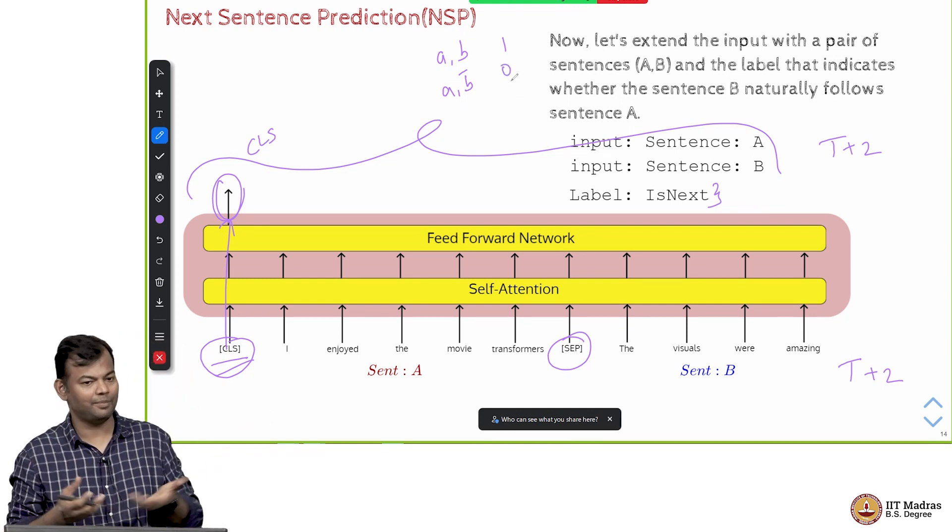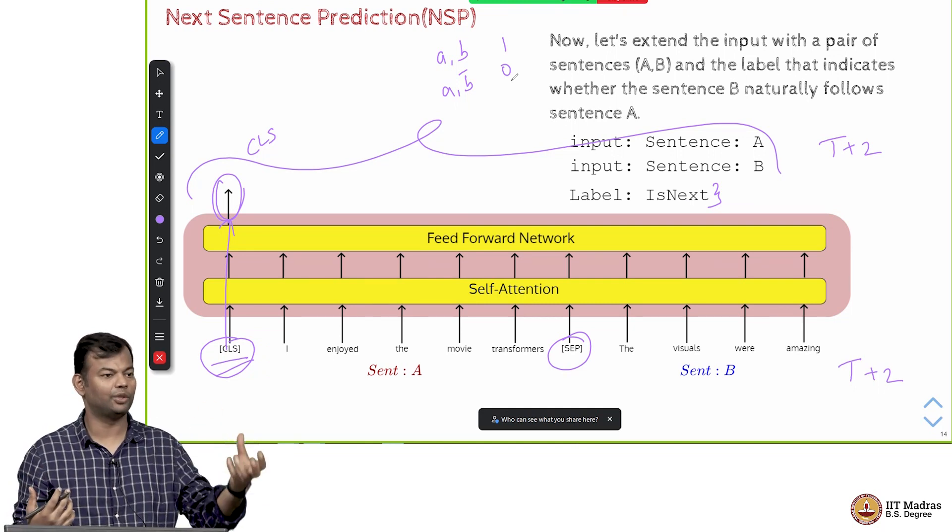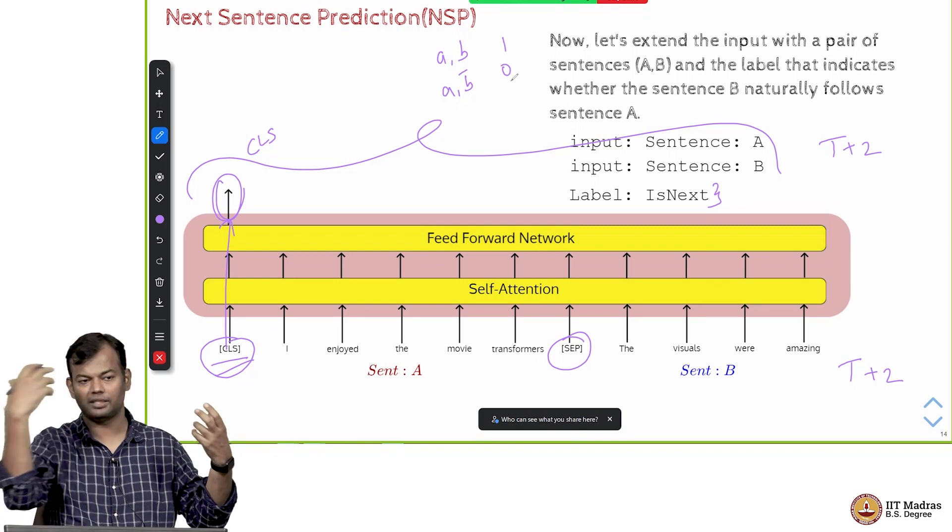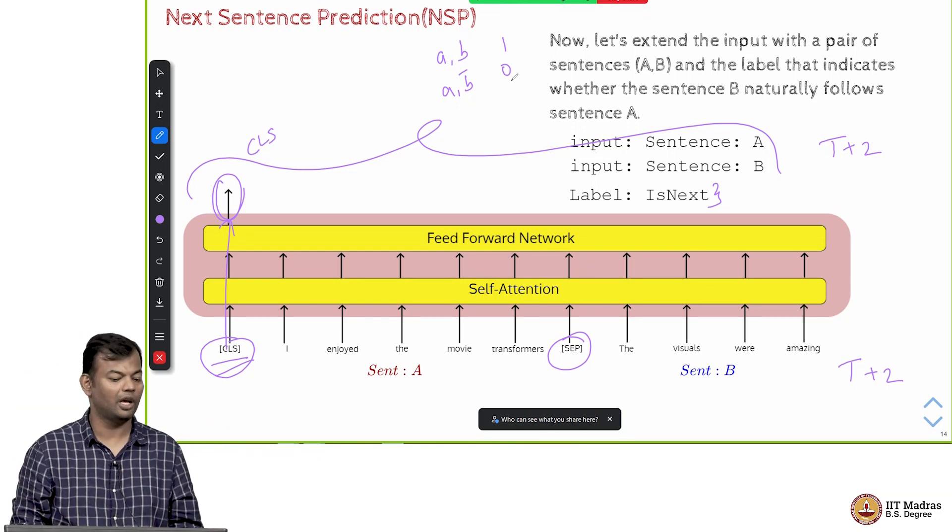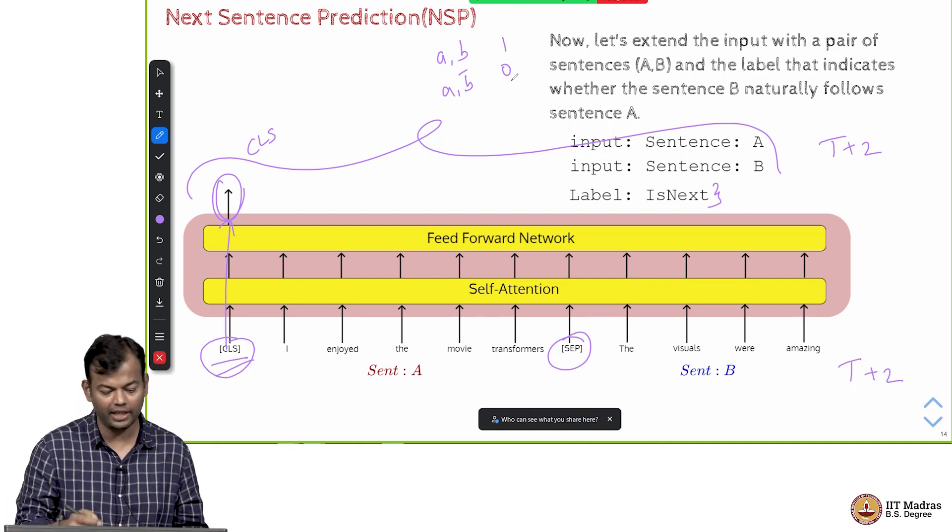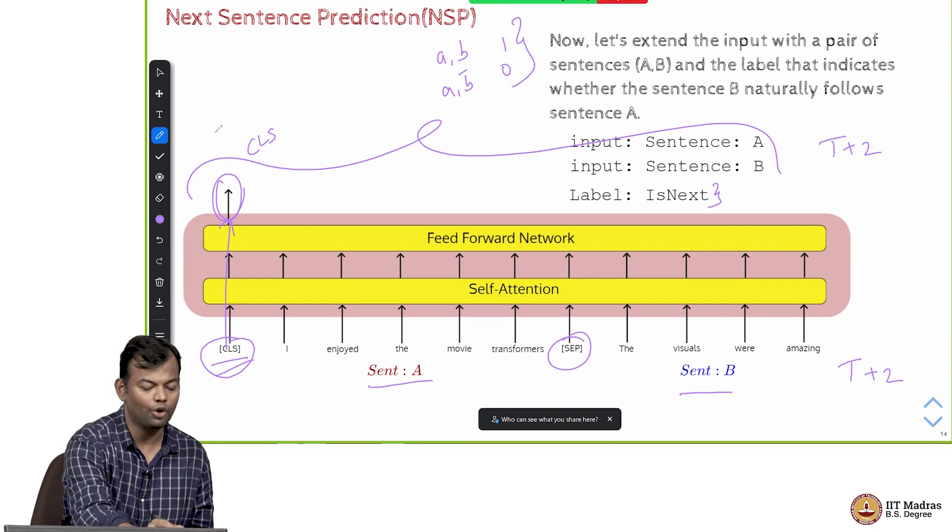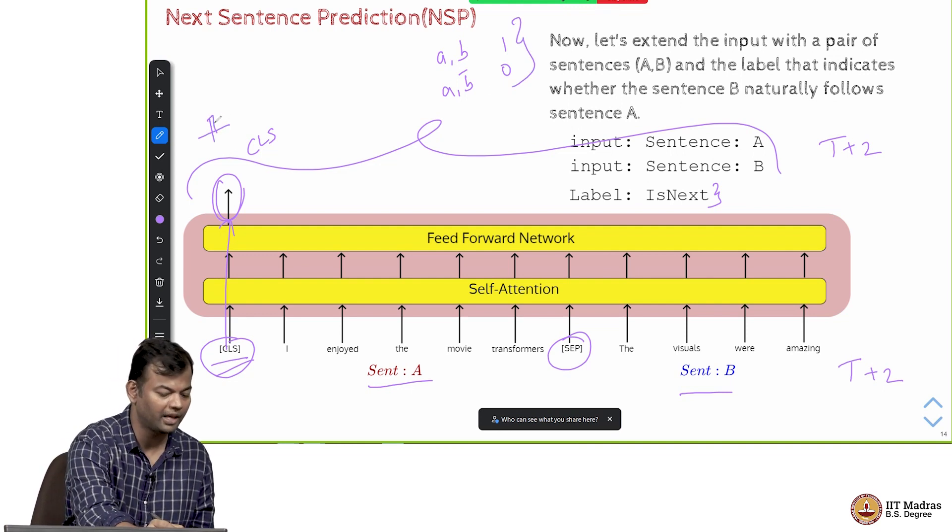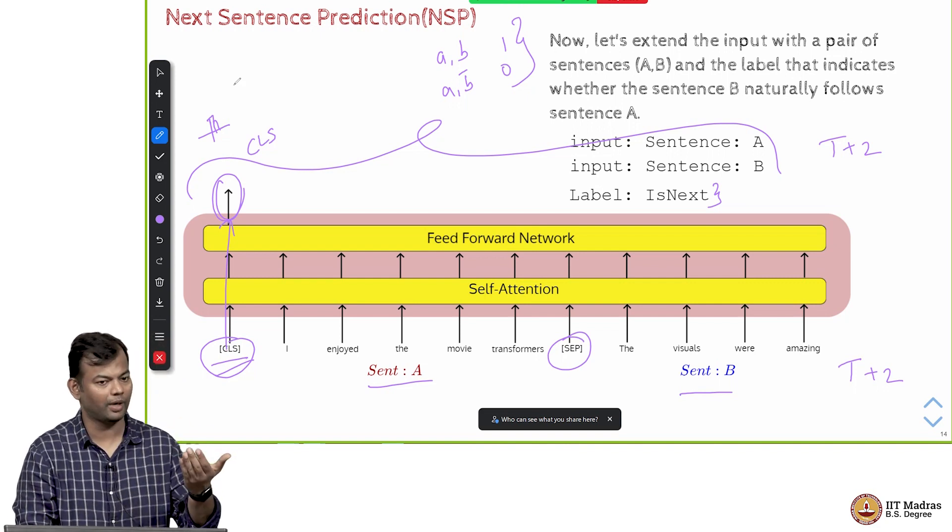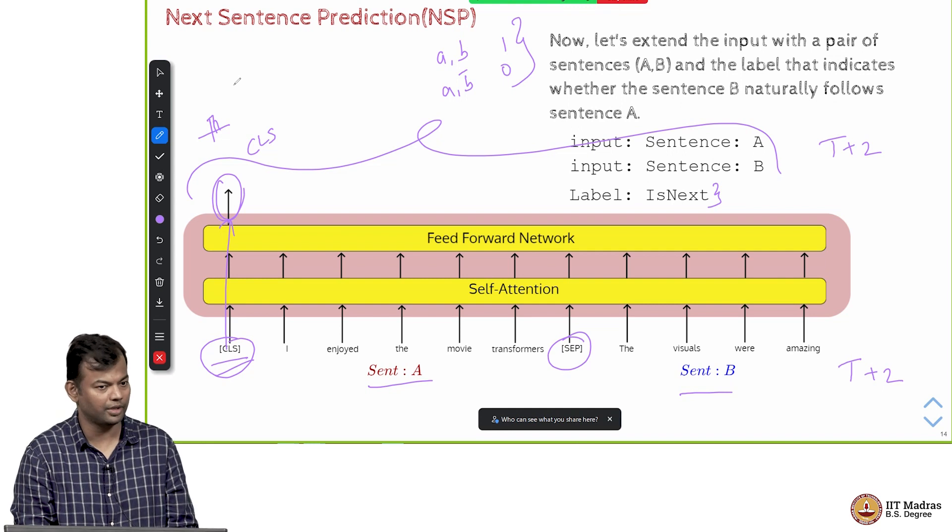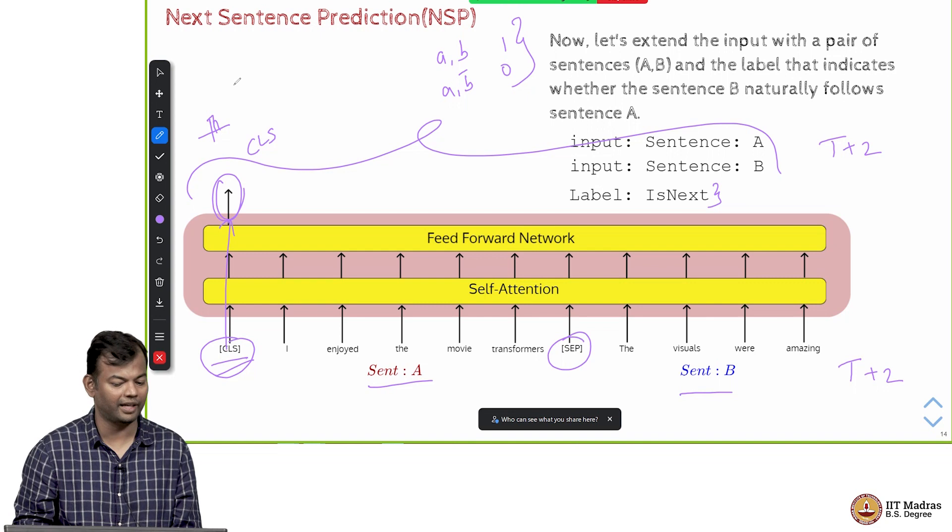I can generate as much data as I want for this because the true sentences I have, and for the false sentences I just need to take a sentence and replace it by some random sentence from the same article or from some other article. This is how you will create training data for this. During training you will pass A comma B pairs along with the label and its job would be to maximize the correct probability. If it is 1 then it should maximize 1, if it is 0 it should maximize the probability of 0. Simple binary classification task. This is the other objective that was introduced.